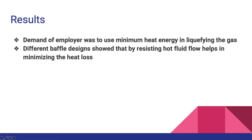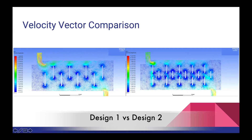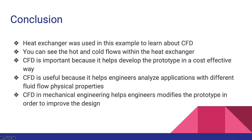As we can see from the results, comparing the temperature vectors for both designs, the temperature is more evenly distributed and much better in Design 2. From the velocity vectors, we can see how the baffles are restricting the flow. As part of the design team, our task was to design baffles for a heat exchanger. The employer's problem was that there was too much heat loss at the outlet.